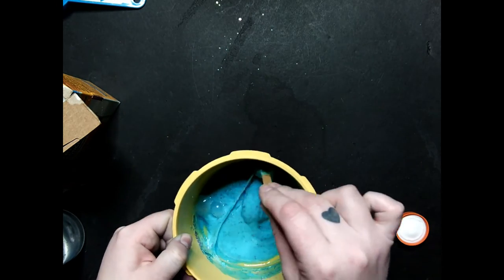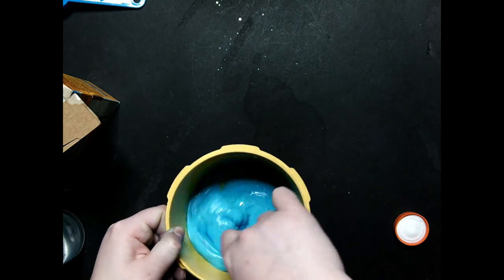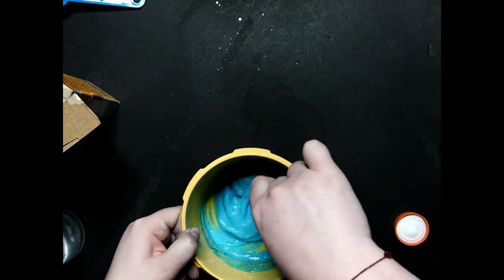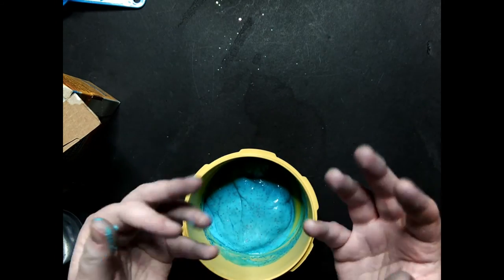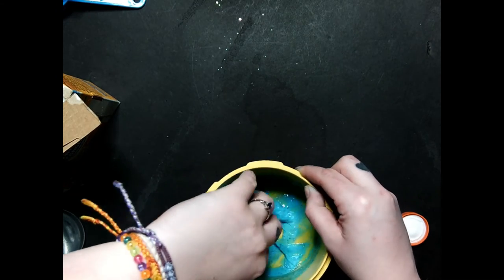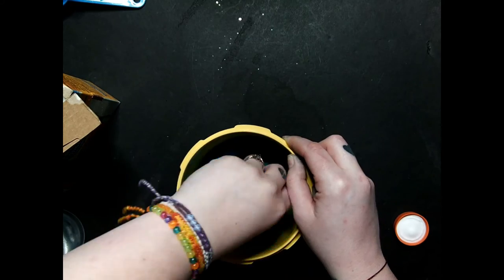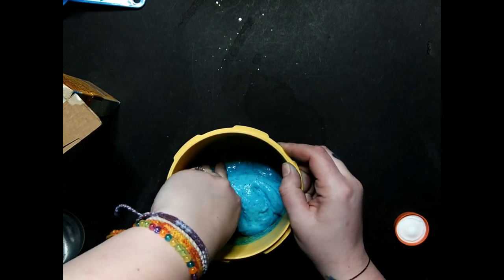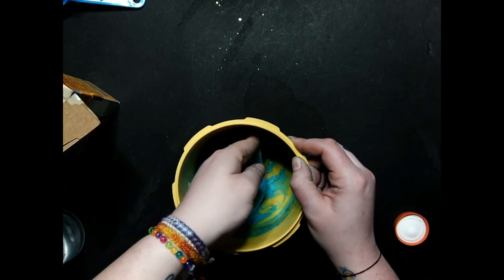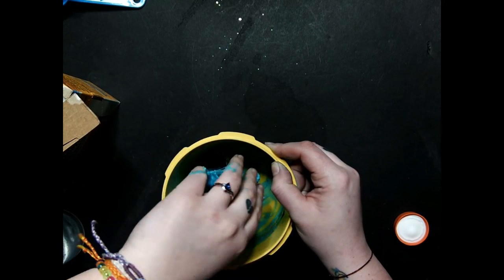So you can stir that with your popsicle stick or your spoon. But it gets to a point where the best thing you can use to mix it is your fingers. So you get in there. It's going to be really sticky because it is glue. But the more you work that contact solution in, the less sticky it's going to be. And that's what the contact solution does is it helps with the stickiness.